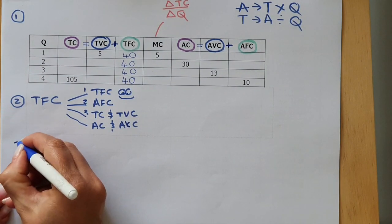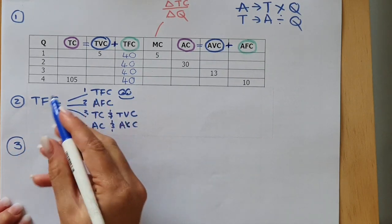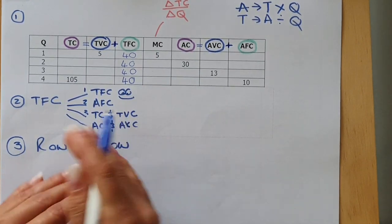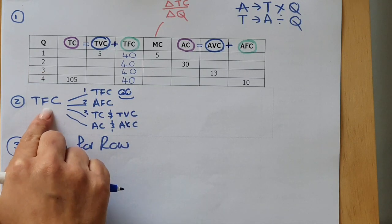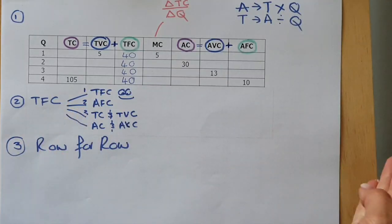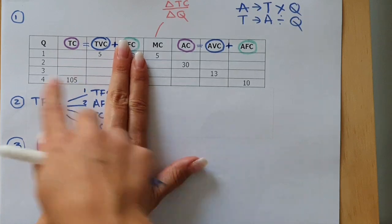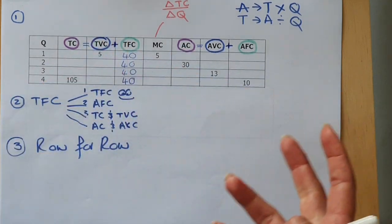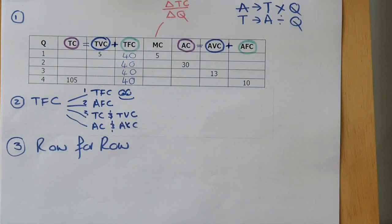The third thing: after you have Total Fixed Cost, go row for row — otherwise you won't have enough information. The reason I tell you to look for Total Fixed Cost first, after writing the pairs and formulas, is because you need two values in each row to complete it. If you do not have two values you will not be able to proceed. Without Total Fixed Cost first, at quantity 3 or quantity 2 you would only have one value and be stuck. So get Total Fixed Cost first, then go row for row.